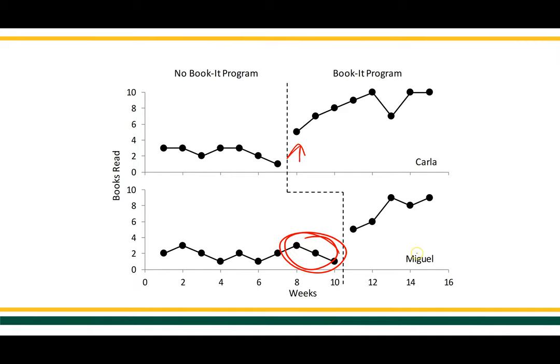We see that for Miguel, in the period of time when he has not started treatment, his behavior remains relatively unchanged. But for Carla, when she starts the Book It program, there's an increase in the number of books read.